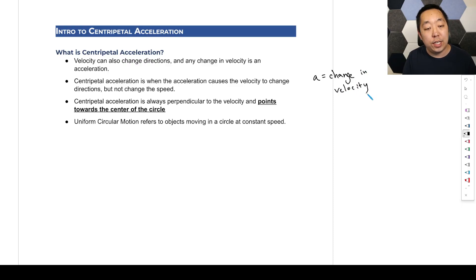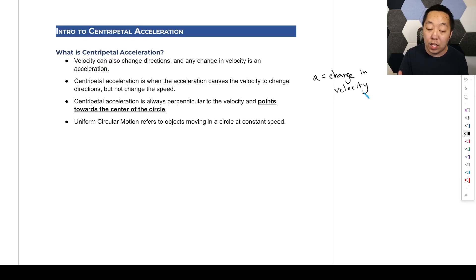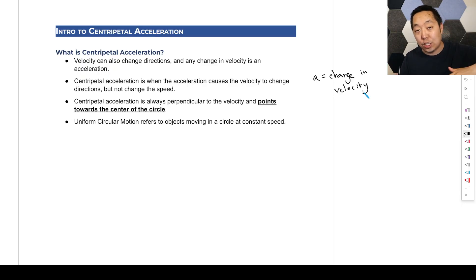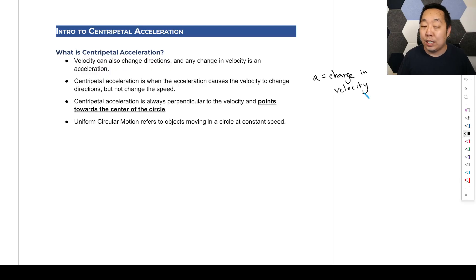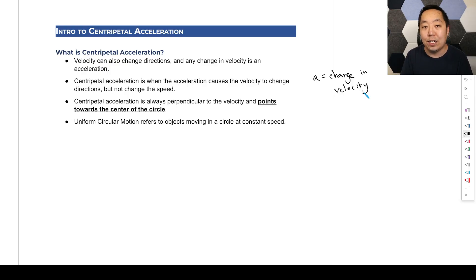What we've done so far is to understand that speeding up or slowing down is the change in the magnitude of the velocity vector. But we can also talk about the change in the direction of the velocity vector, because velocity is a vector. Even if it's the same magnitude — you're going the same speed — but you change directions, then you also have an acceleration. That is also required, because Newton's F-net equals ma: if we change the velocity even in direction, that requires a net force, and there's an acceleration related to it.